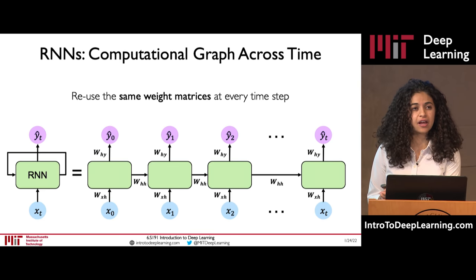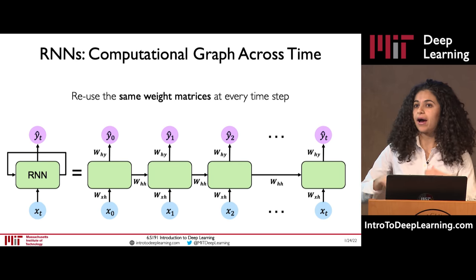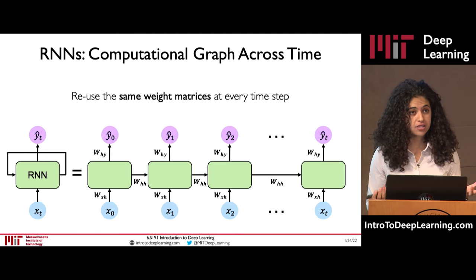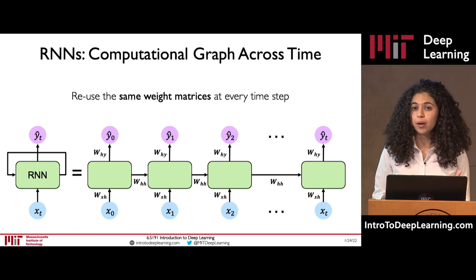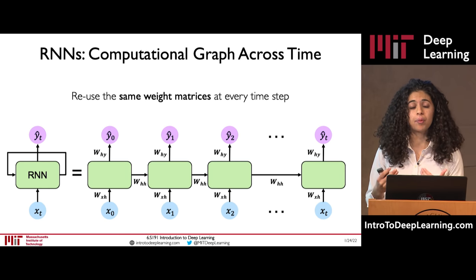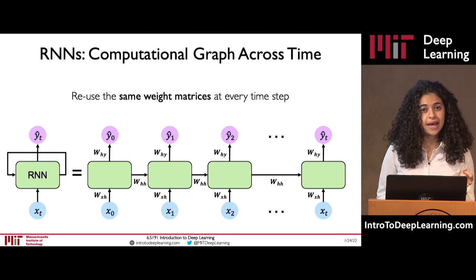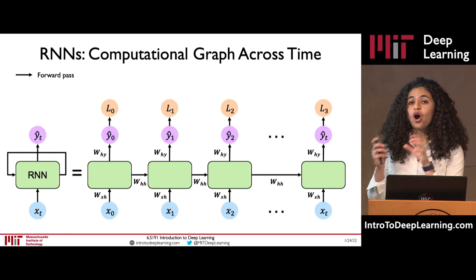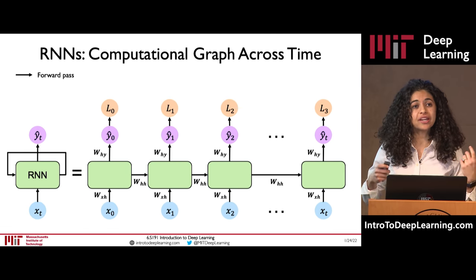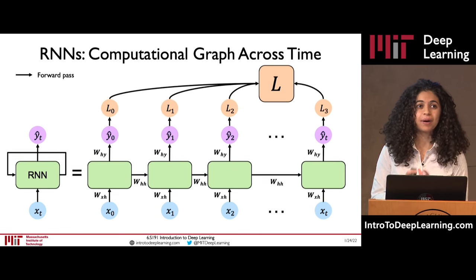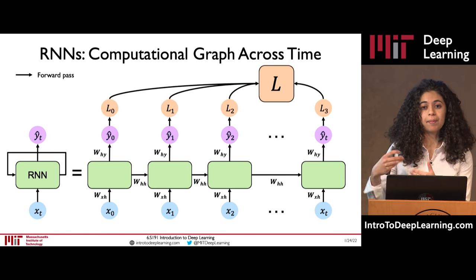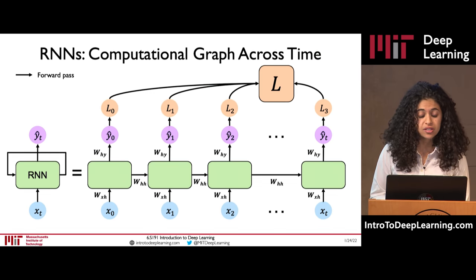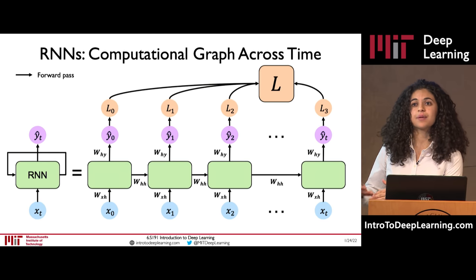Our next step is training. We need a loss. As Alexander mentioned, we train neural networks through iterative optimization of a loss function. We can generate an individual loss for each of the individual time steps according to what the output at that time step is, and we generate a total sum loss by taking these time steps and summing them all together. When we make a forward pass through our network, we generate our output predictions and sum the loss functions across individual time steps to get the total loss.